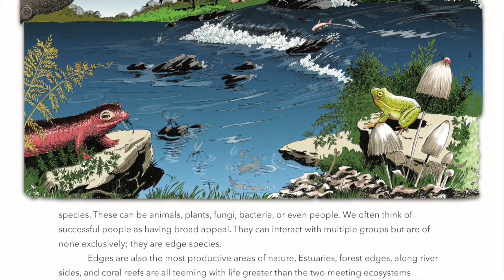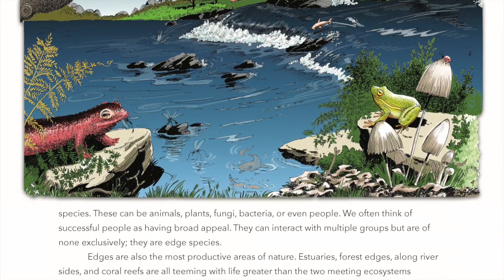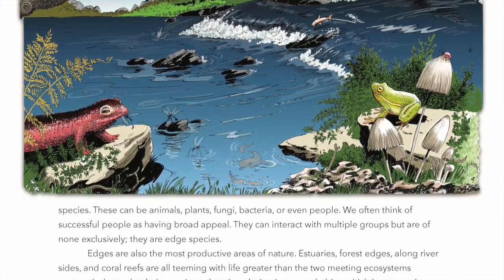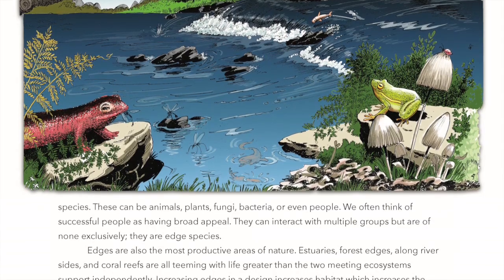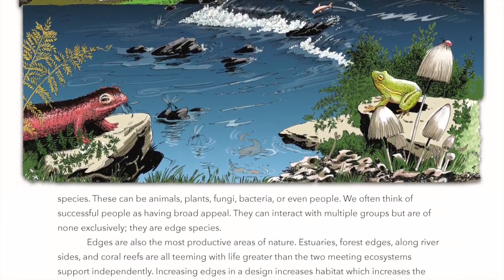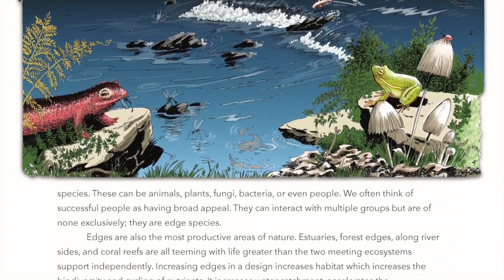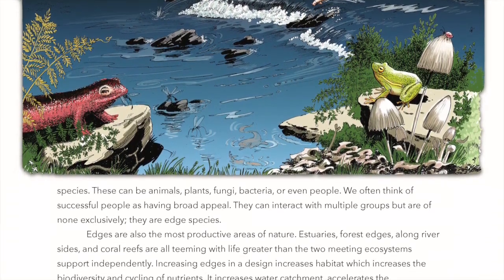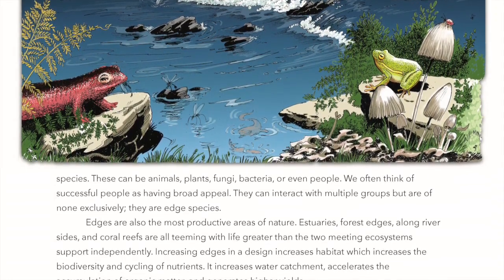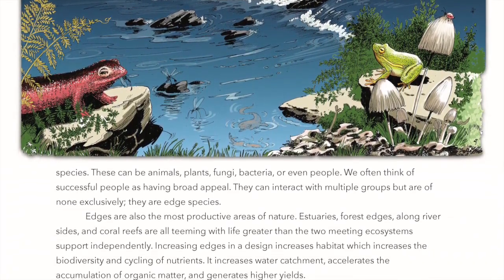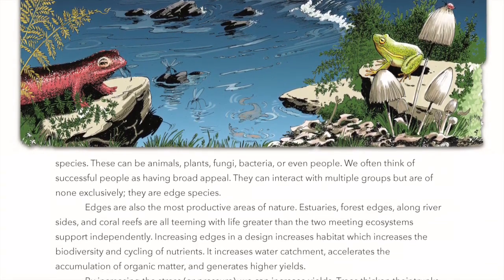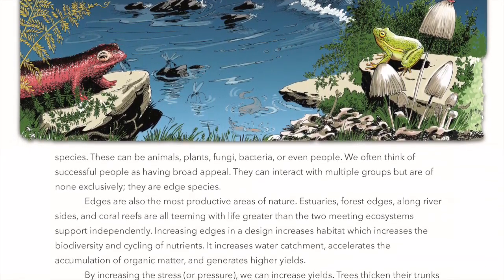Edge species can be plants, animals, fungi, bacteria, or even people. We often think of successful people as having broad appeal — they can interact with multiple groups but are of none exclusively. They are edge species. Edges are also the most productive areas of nature. Estuaries, forest edges, along riversides, and coral reefs are all teeming with life, greater than the two meeting ecosystems support independently.